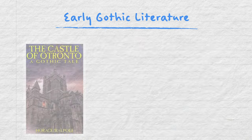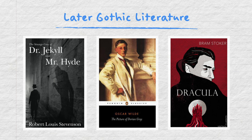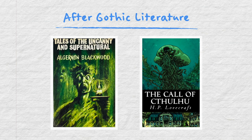Now let me give you some examples of Gothic literature from different eras. Some of the earliest Gothic literature includes The Castle of Otranto by Horace Walpole, The Raven by Edgar Allan Poe, and Frankenstein by Mary Shelley. Later Gothic literature includes The Strange Case of Dr Jekyll and Mr Hyde by Robert Louis Stevenson, The Picture of Dorian Gray by Oscar Wilde, and Dracula by Bram Stoker. A couple of texts from around the Victorian era include Tales of the Uncanny and Supernatural by Algernon Blackwood and The Call of Cthulhu by H.P. Lovecraft.